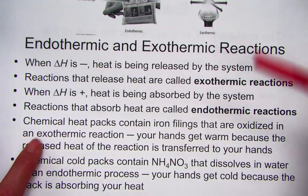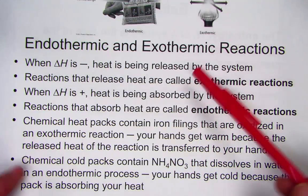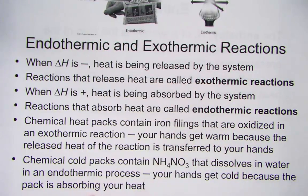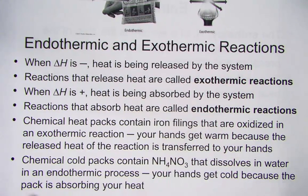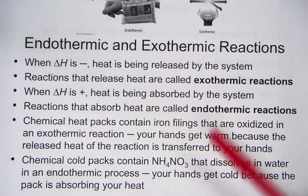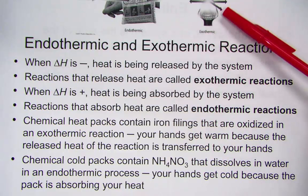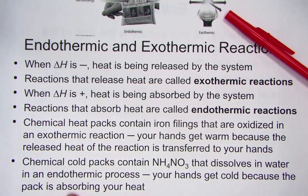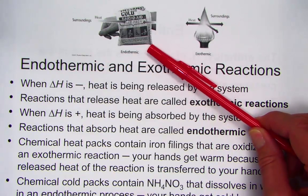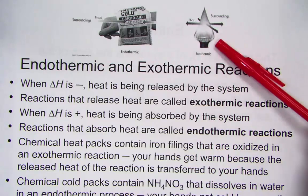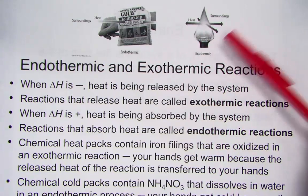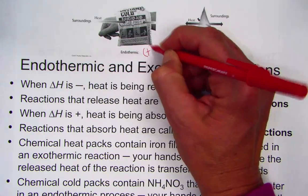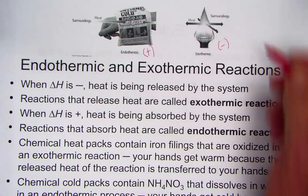This is simply showing a chemical heat pack and a chemical cold pack. A cold pack represents an endothermic process where ammonium nitrate dissolves in water — your hands would actually get cold holding on to this chemical change. If heat is being released to the surroundings from the system, we call that exothermic, and your hand would actually get warm to the touch. Endo is heat absorbing, positive sign; exo is heat releasing, negative sign.